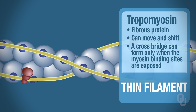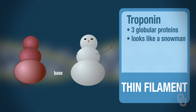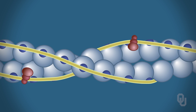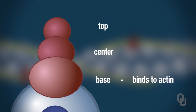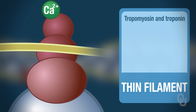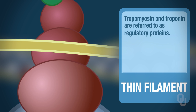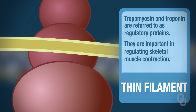The third structure that makes up the thin filament is called troponin. Troponin consists of three globular proteins. I think of troponin like a snowman, because a snowman consists of three parts: a base, a center, and a top. The bottom troponin binds to actin, the middle troponin molecule binds to tropomyosin, and the top troponin protein binds calcium. When we put tropomyosin and troponin together, those are referred to as regulatory proteins, because they're very important in regulating skeletal muscle contraction.